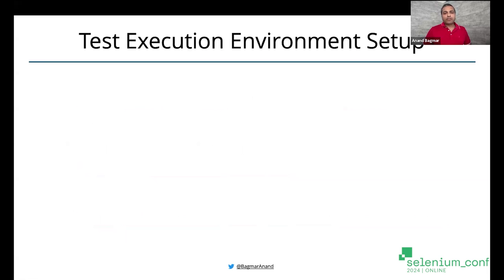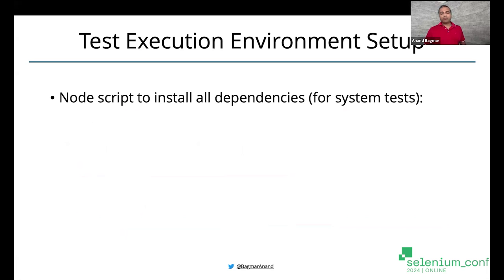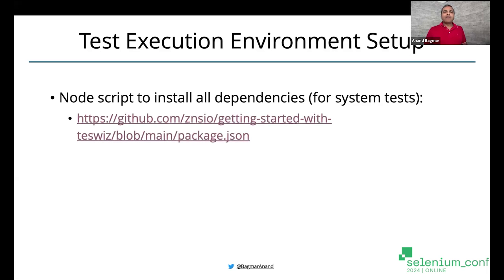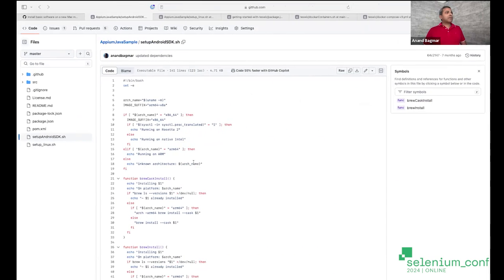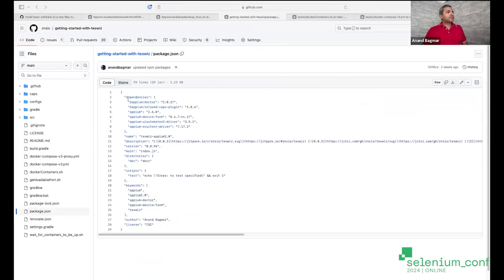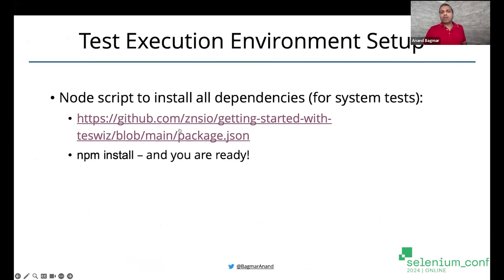The next thing you need to do is handle Node and other dependencies. If I'm going to run Appium 2 tests for Android or iOS, I need Node and other such dependencies available as well. I have something slightly different but equally simple — a simple package.json where you specify all the dependencies, and then all you have to do is npm install and you're good to go. Appium is installed, all dependent plugins and drivers are installed, and you can start running your tests.